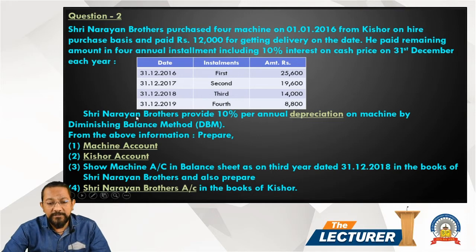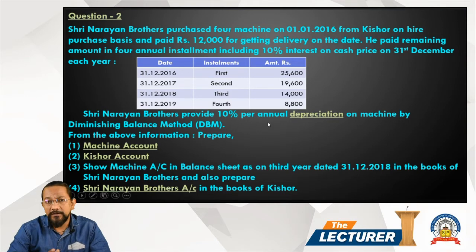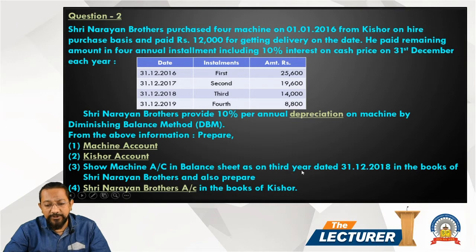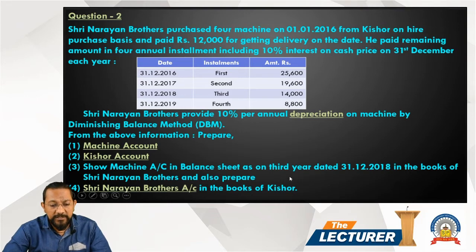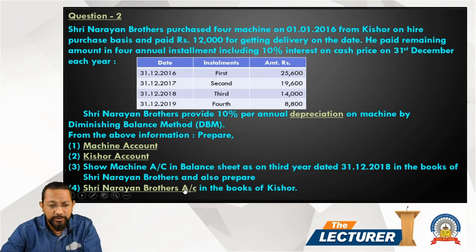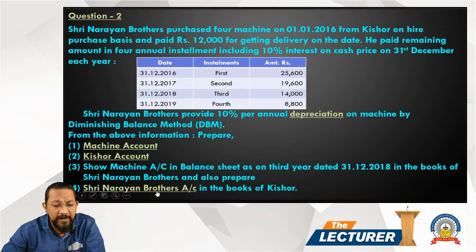Sri Narayan Brothers provides 10% per annum depreciation on the machine by the diminishing balance method. The previous question used the SLM method; this question uses the diminishing balance method. From the following, prepare the machine account, Kisor account, and show the machine account in the balance sheet as at 31st December 2018 in the books of Narayan Brothers, and also prepare the Narayan Brothers account in the books of Kisor.